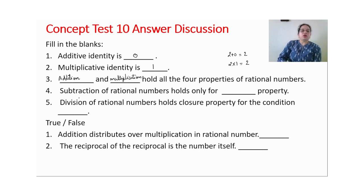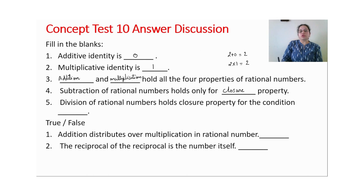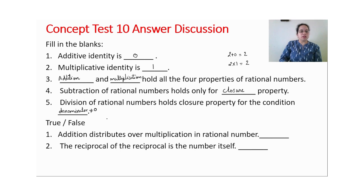Subtraction of rational numbers holds only the closure property. Division of a rational number holds the closure property for the condition that the denominator is not equal to 0. Write down 'denominator should not be 0' so that any reader understands.